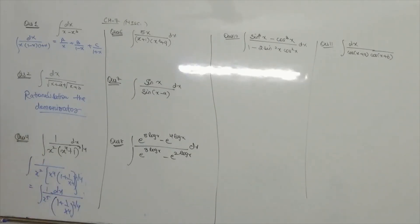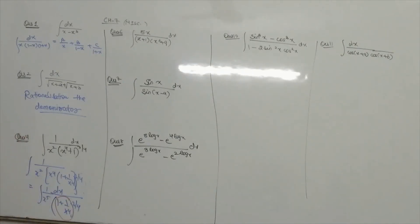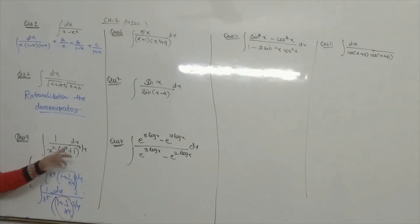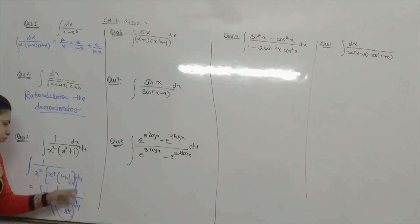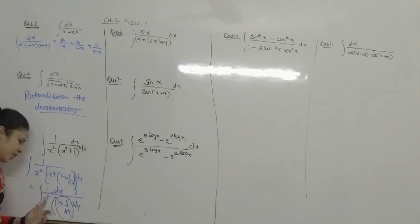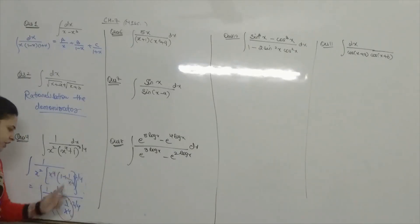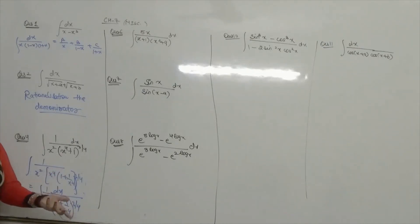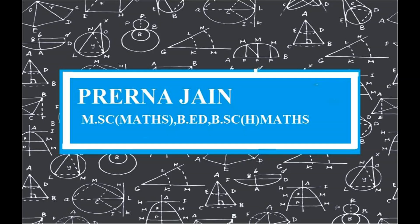we will take x to the power 3 by 2, we will take x to the power 4. So, what will be x to the power 4? x to the power 3 by 2. So, we will take x to the power 4.